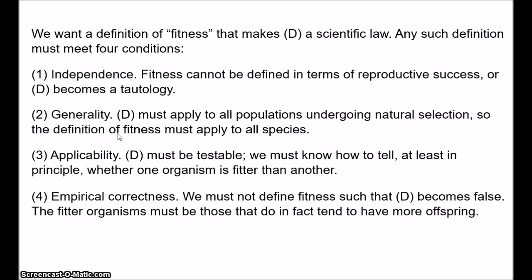Finally, empirical correctness: the definition of fitness should not be such that D becomes false. When we identify the fitter organisms, it must turn out that those organisms do, on average, have more offspring. Suppose we were to say that fitter organisms are those that are more intelligent. In principle we could figure out which organisms are more intelligent, but it's pretty clear that intelligent people don't tend to have more offspring than unintelligent ones. In fact, if you treat education as a proxy for intelligence, people with higher levels of education tend to have fewer offspring. So if fitness just means intelligence, D becomes false.